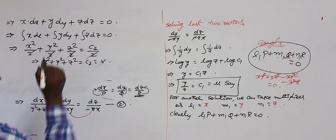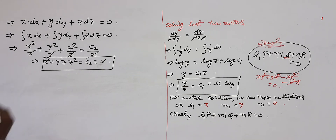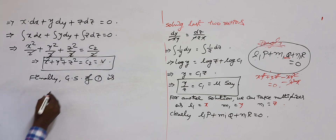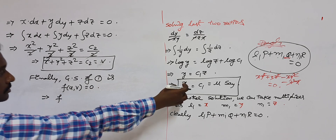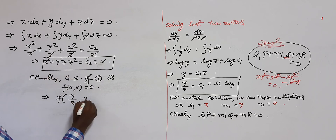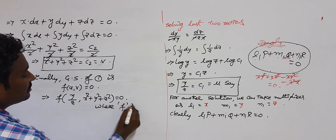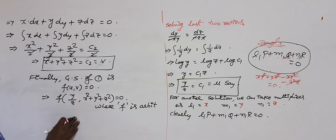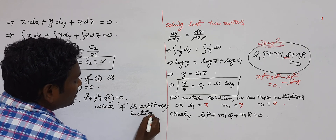Finally, the general solution of equation 1: since Lagrange's PDE is a first-order partial differential equation, its general solution contains only one arbitrary function. The general solution is f(u, v) = 0, that is, f(y/z, x² + y² + z²) = 0, where f is an arbitrary function.